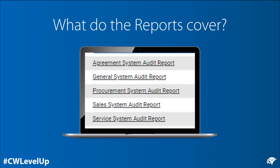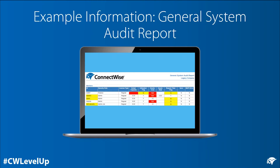The reports cover five areas: Agreements, which reviews parent-child agreements, additions, agreement types, and costing; General System, which reviews company structure, member setup, security, and invoicing best practice; Procurement, which covers product setup, inventory management, and purchase orders; Sales, which reviews opportunities, activities, and marketing campaigns; and Service, which reviews service and project setup.